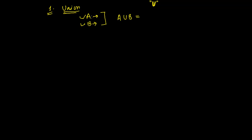All the elements of A and B combined, not repeating the elements — that is what union represents. So if any element X is a member of A union B, then X belongs to A, or X belongs to B, or maybe both. Keep that in mind.